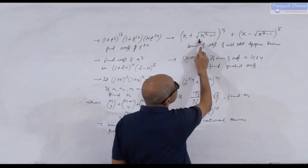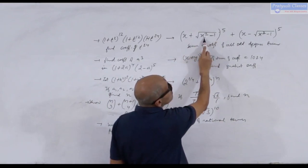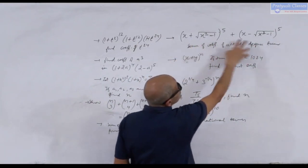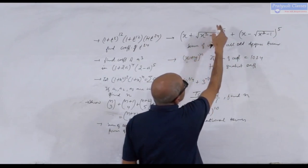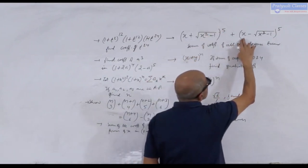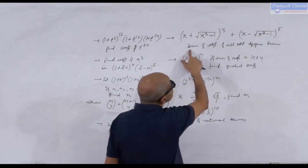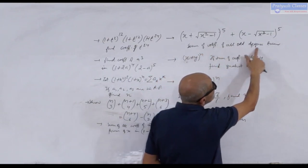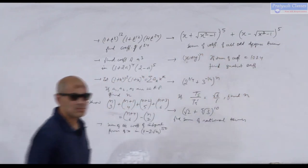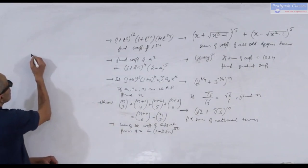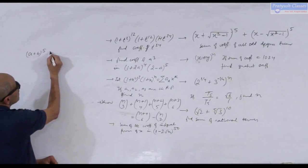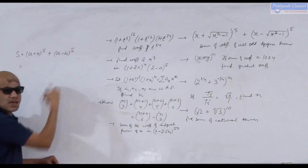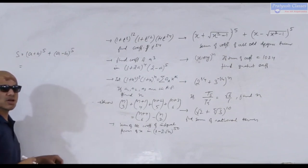The expression given is (x + √(x³-1))⁵ + (x - √(x³-1))⁵. We need to find the sum of coefficients of all odd-degree terms. Let's expand it by writing (a+b)⁵ + (a-b)⁵, and we are calling this expression S.